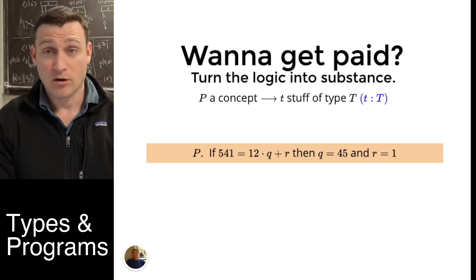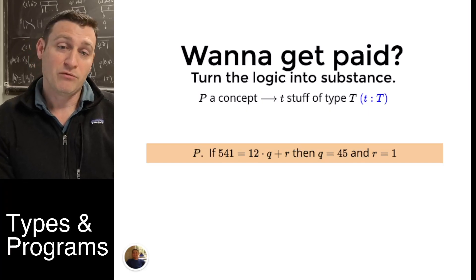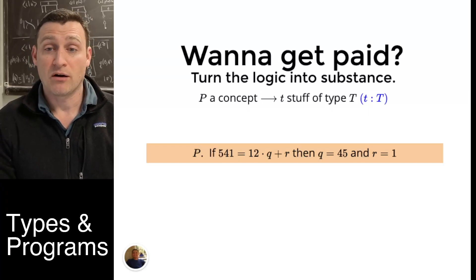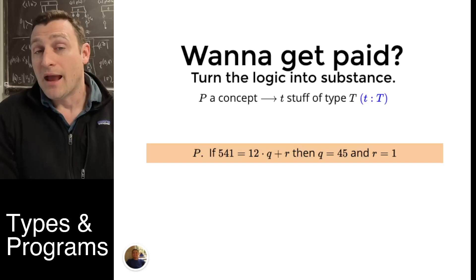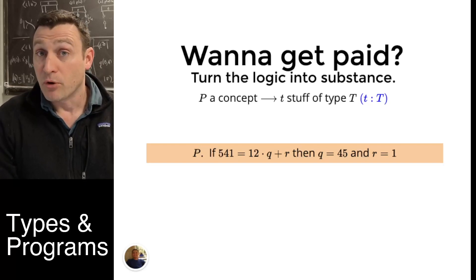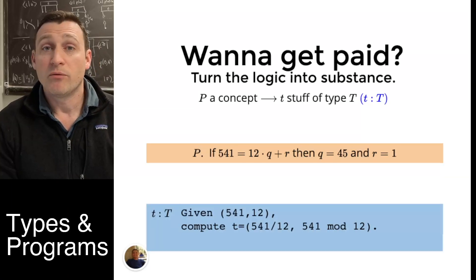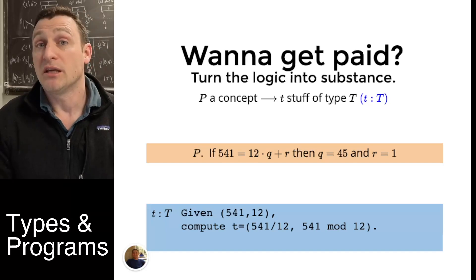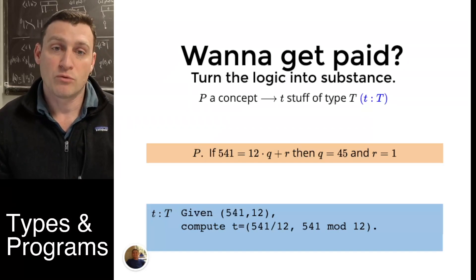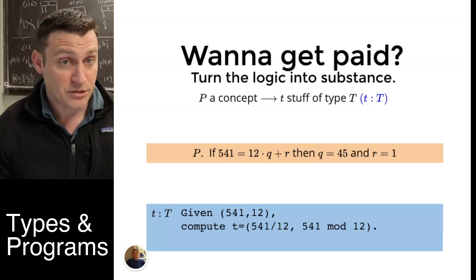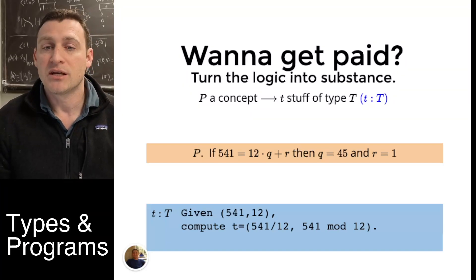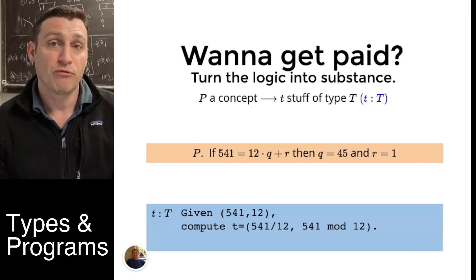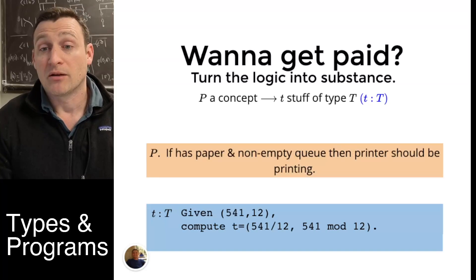Let's try to make this a little more realistic. Suppose that I asked myself a very mathematical concept. I was told that P was simply the following statement: If 541 equals 12 times Q plus R, then Q is 45 and R is equal to 1. That's the kind of statement you might make about natural numbers. Since there are no negatives, there's really only one way to solve it. It's called the division algorithm. And as the name might suggest, there's actually a program behind it. To get something of substance, we would want the things that came at the end of the if-then. Given 541 and the number 12, we could ask to compute the result, 541 divided by 12 as an integer, and 541 mod 12, what's the remainder?